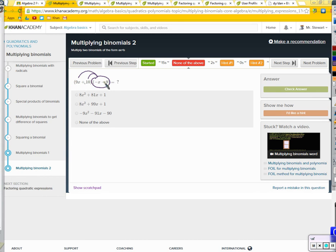I would do the same thing here if I had 9x plus 10 times 3. I would just distribute the 3 to both of these things and I would get 27x plus 30. Right? Agreed? You're good? Okay.